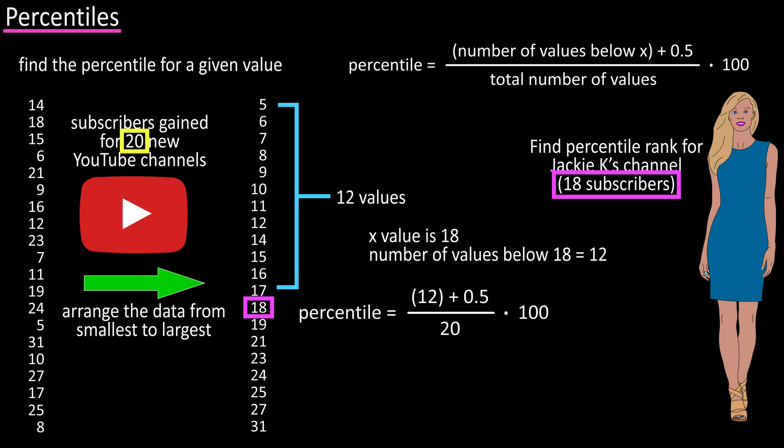Doing the calculations, we get percentile equals 62.5. So, we would say the value of 18, or Jackie Kay's channel, is higher than 62.5% of the other data values or channels in this data set.